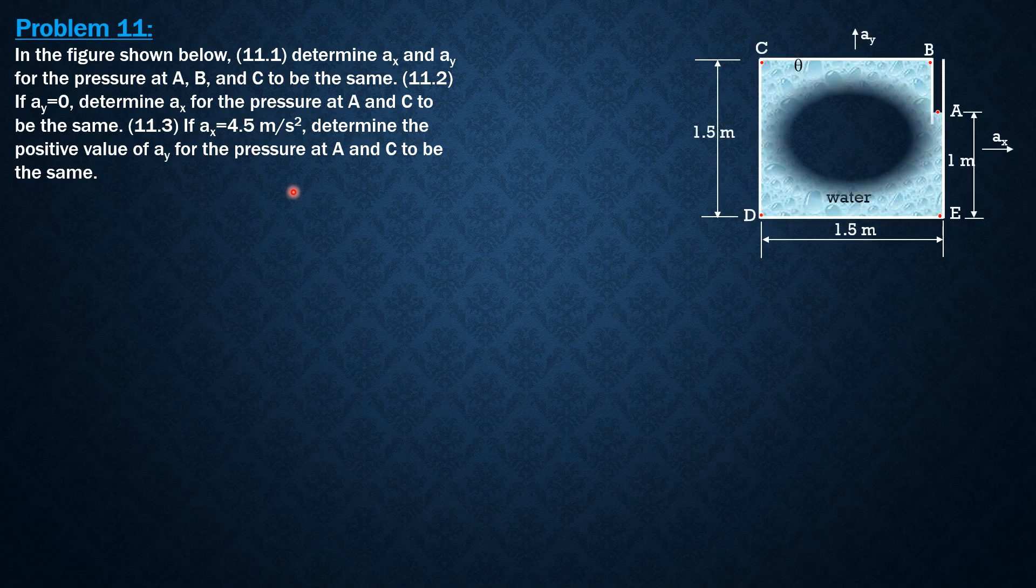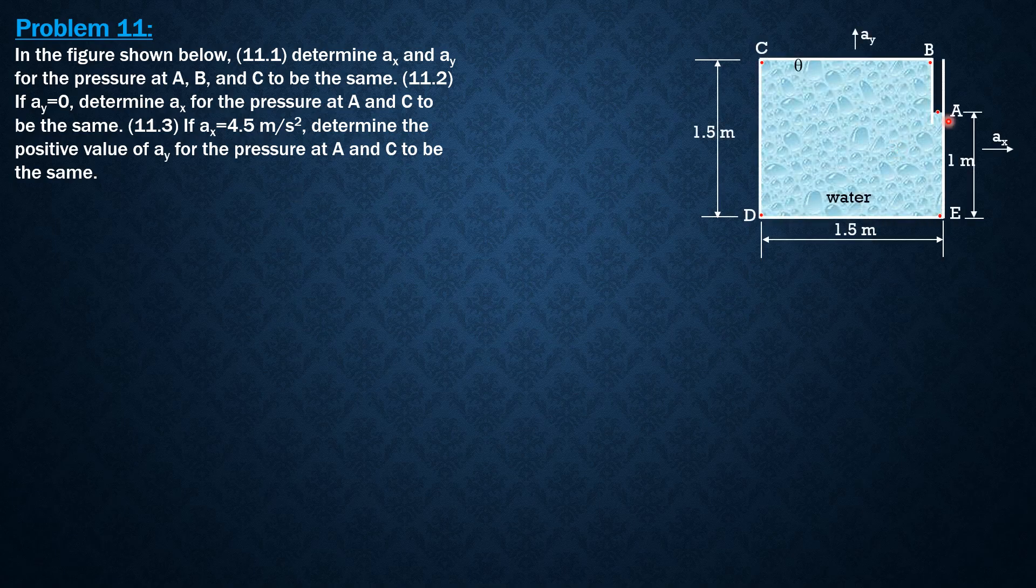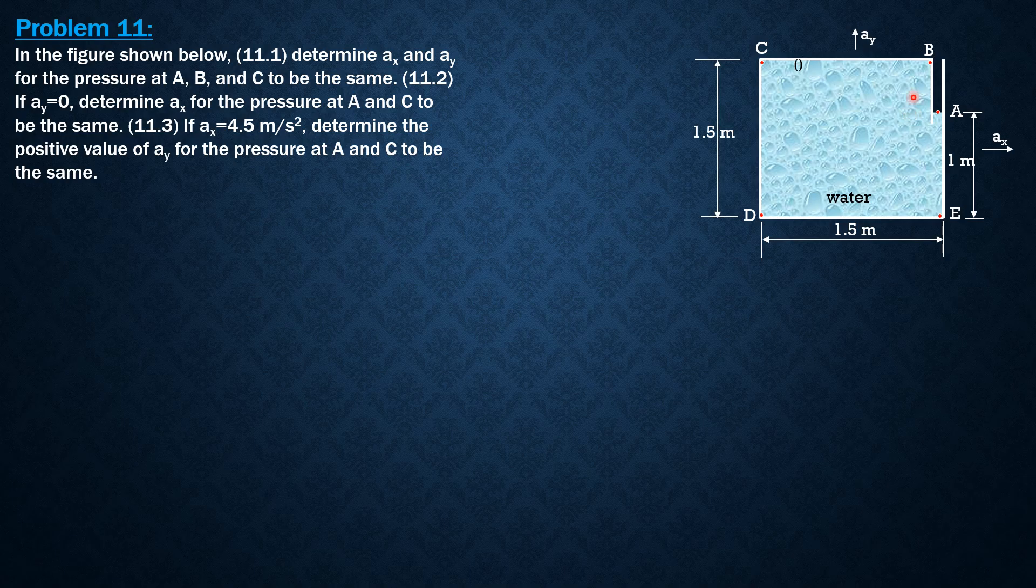So for the first, let's look at the figure. We know that the pressure at A is always 0. Then without motion, the pressure at B and C, the pressures at B and C will be negative because they are above and the 0 pressure level is through A.